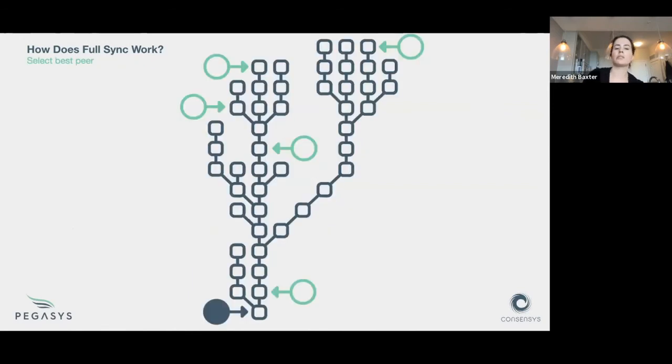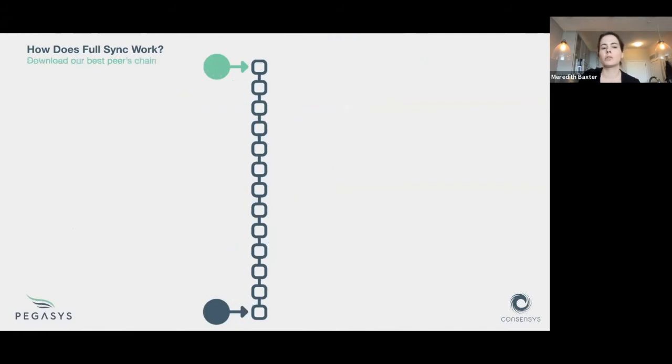Given that information, we're going to select our best peer, which is the peer with the heaviest chain head block. In this little diagram, that's going to be the peer in the top center there. Once we've selected a best peer, that basically collapses this tree into a single chain, so it kind of simplifies the view of the network.